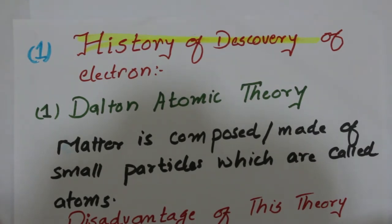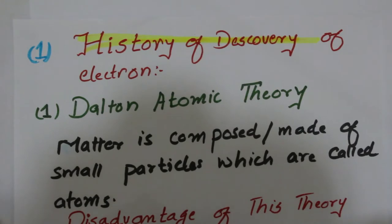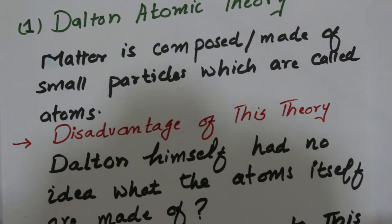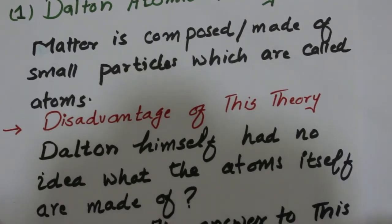It was John Dalton who proposed his atomic theory and said that matter is composed of small particles called atoms. With his theory he successfully explained the law of conservation of mass, law of multiple proportions, and law of definite proportions, which was the biggest success of this theory. But the main drawback was that Dalton himself had no idea what atoms are made of — whether atoms are indivisible or composed of smaller particles.